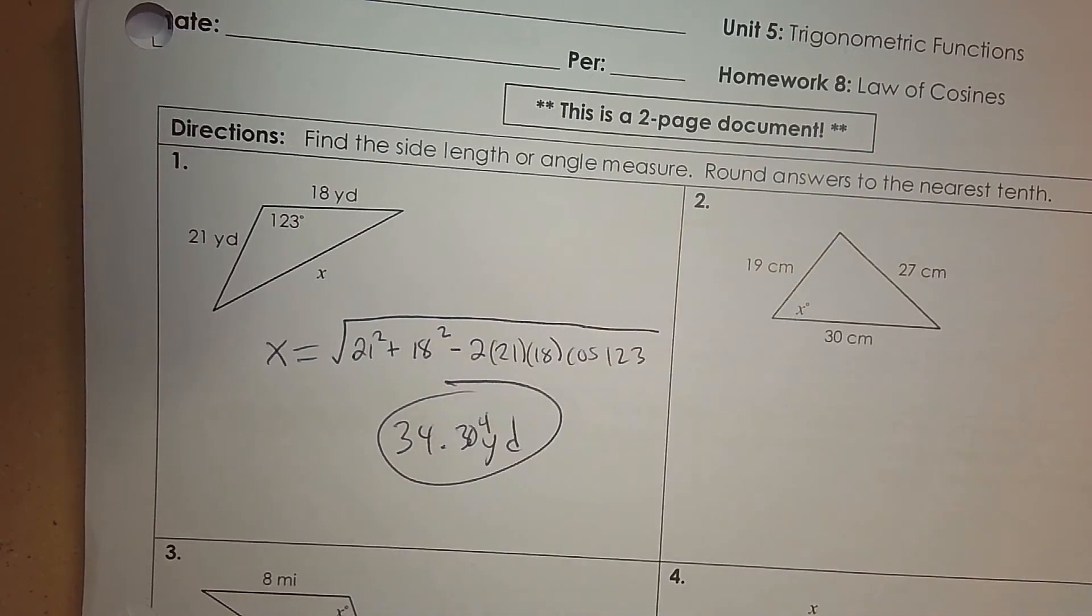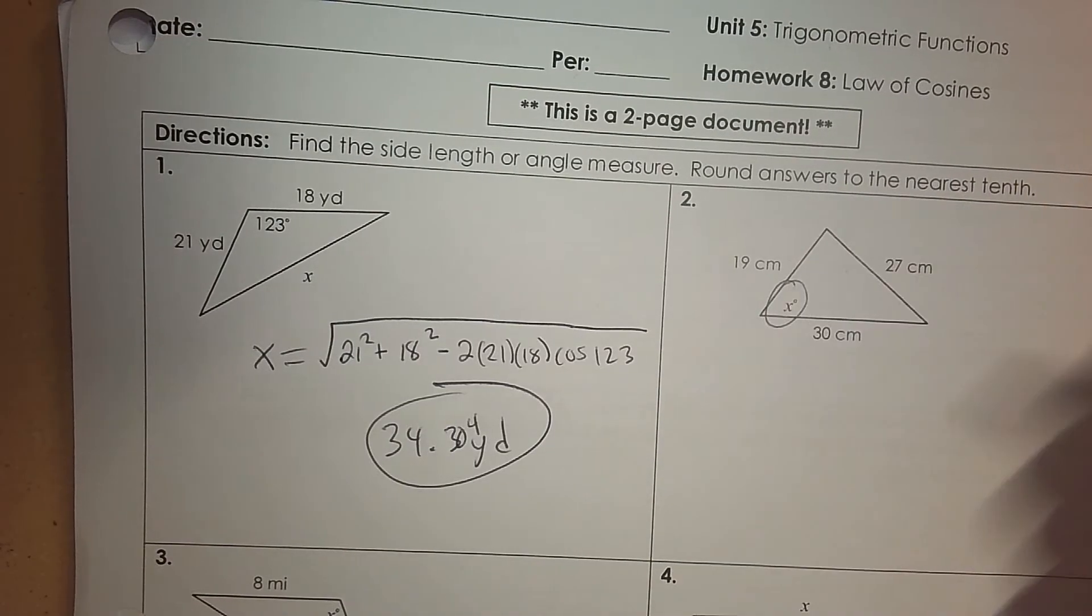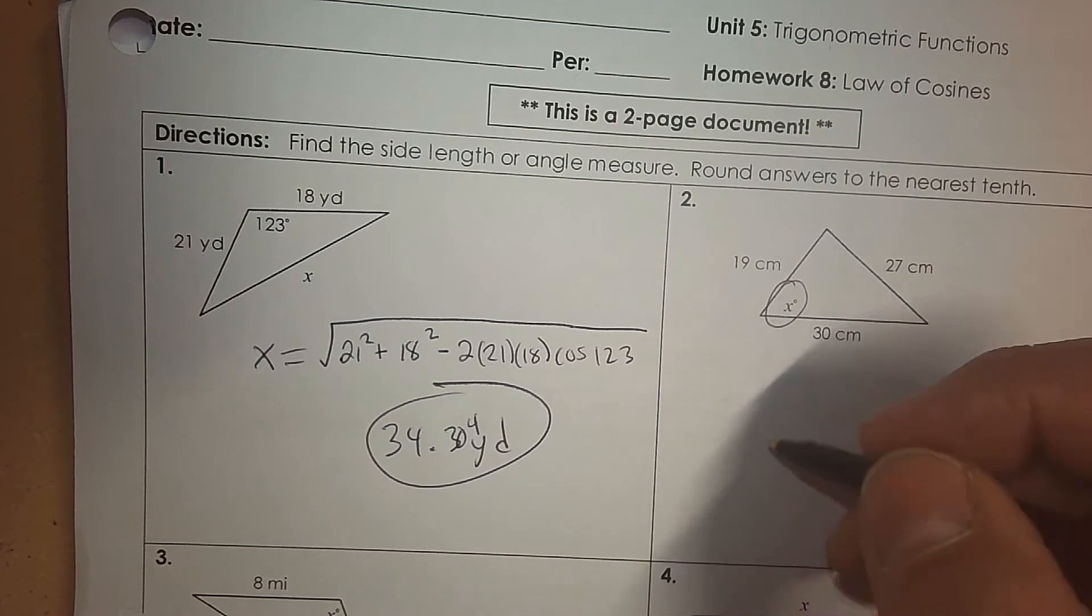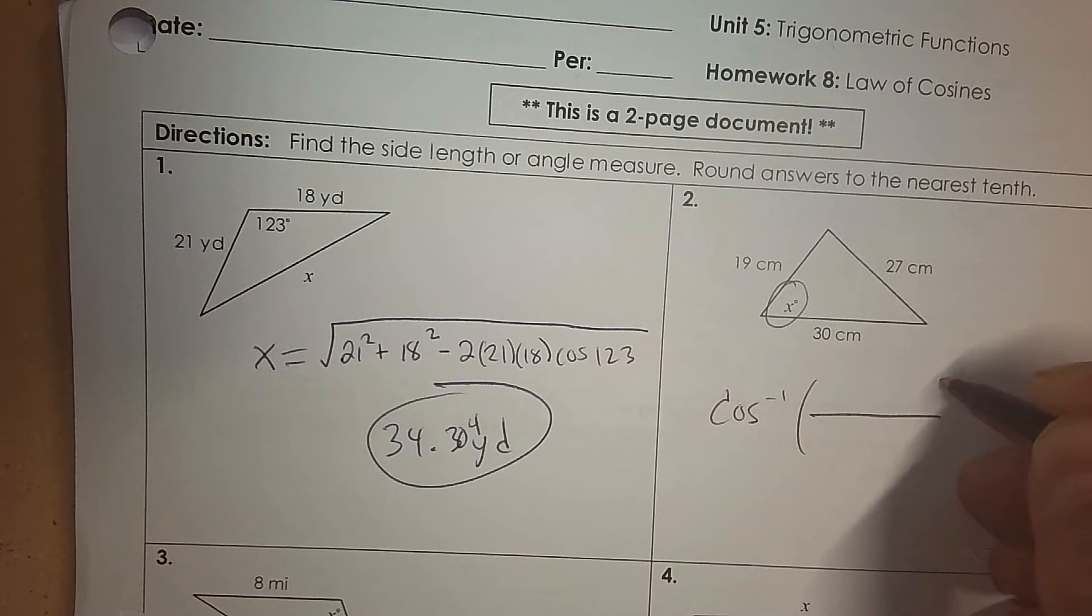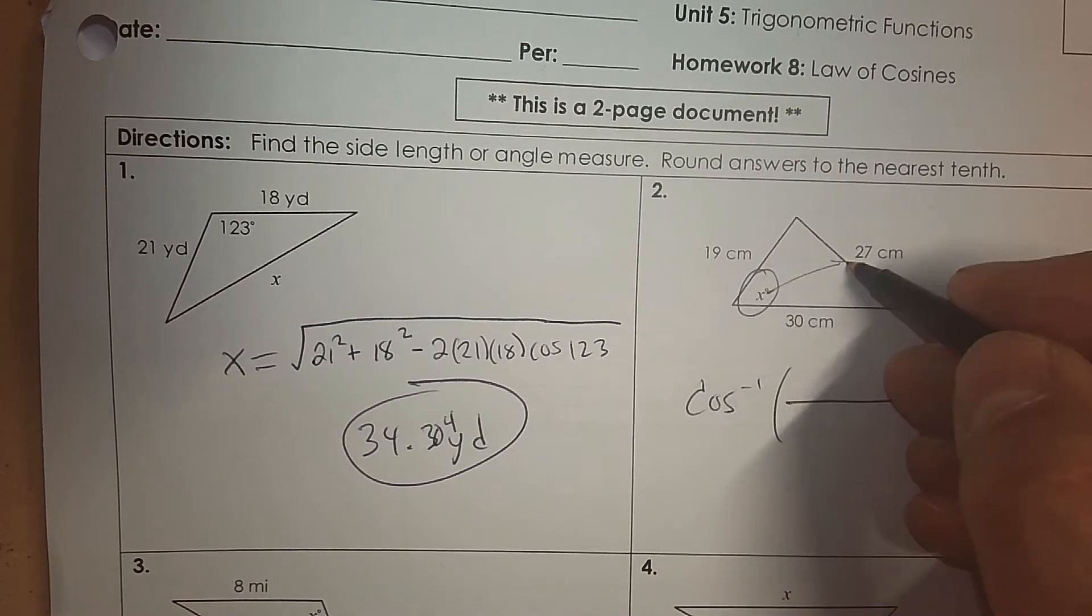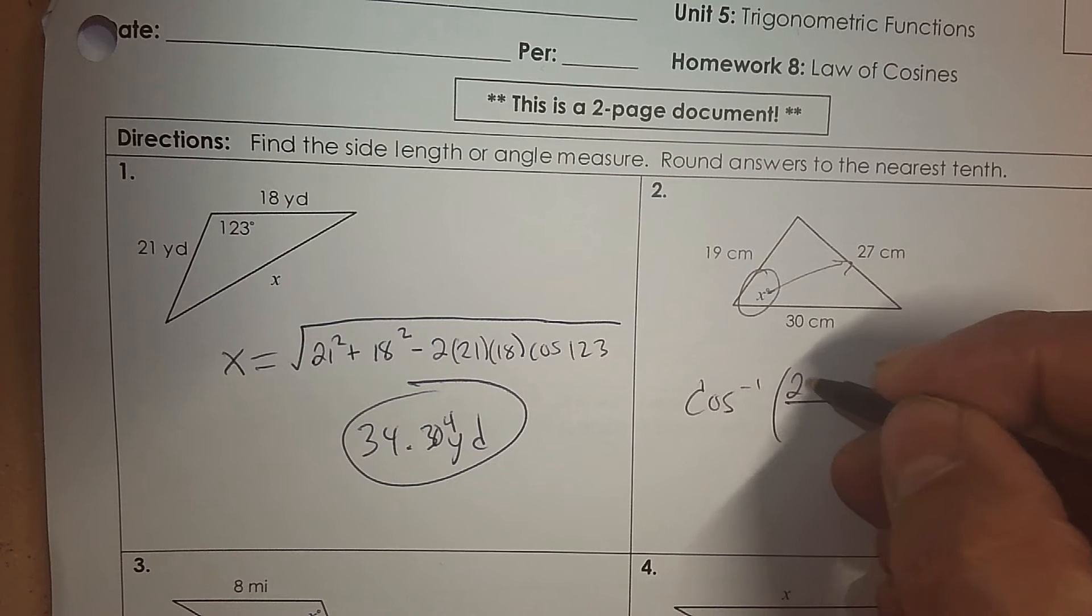All right, number two. I want to find a missing angle. So to find that missing angle, it's inverse cosine, and we're going to have a big fraction. So order matters here at the beginning. So what side is opposite of x? That's 27. We're going to start there.